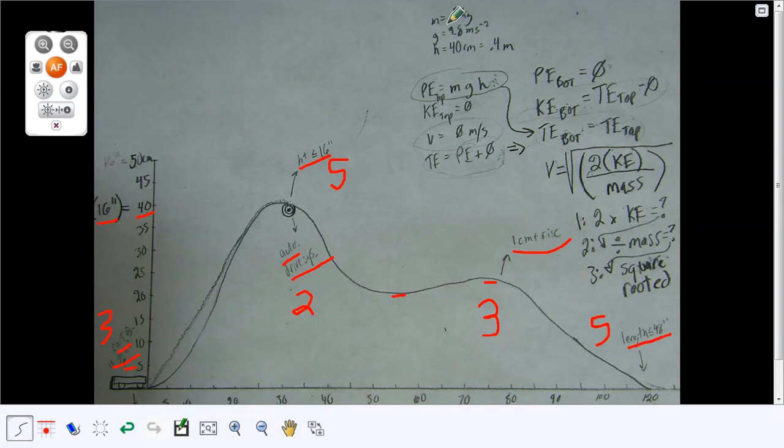The next thing this sketch needs is to calculate the potential energy, kinetic energy, total energy, and velocity. At the top, potential energy is the mass times gravity times the height.